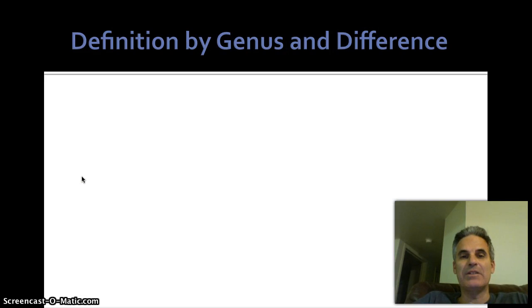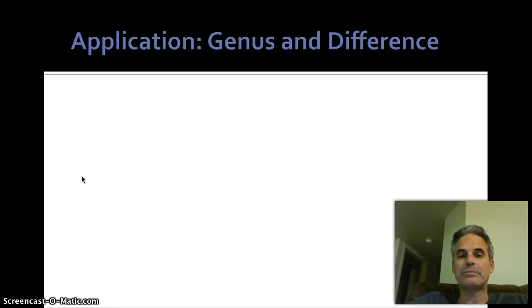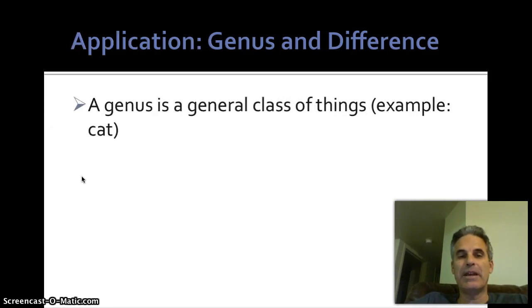Genus and difference. What we're going to do is we're going to define a word as a species of a genus and describe how that species is different from other species within that genus. Now, let me translate. What we're going to do is we're going to take a word and say, okay, it's part of this larger group. And then what distinguishes that word from other members of that larger group. So here's an application.